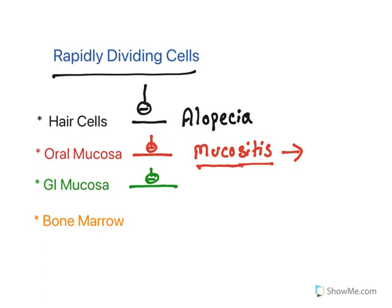GI mucosa is also under continuous multiplication, so when its multiplication is inhibited it results in severe nausea and emesis. Nausea and emesis are also caused because some drugs get into the CNS and activate the chemoreceptor trigger zone — the zone responsible for nausea and emesis. So both mechanisms contribute: CNS activation and GI mucosal inhibition.